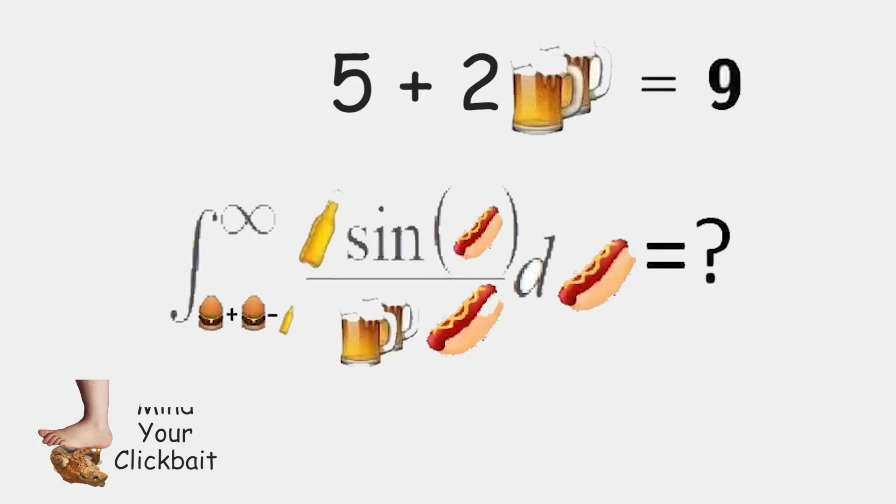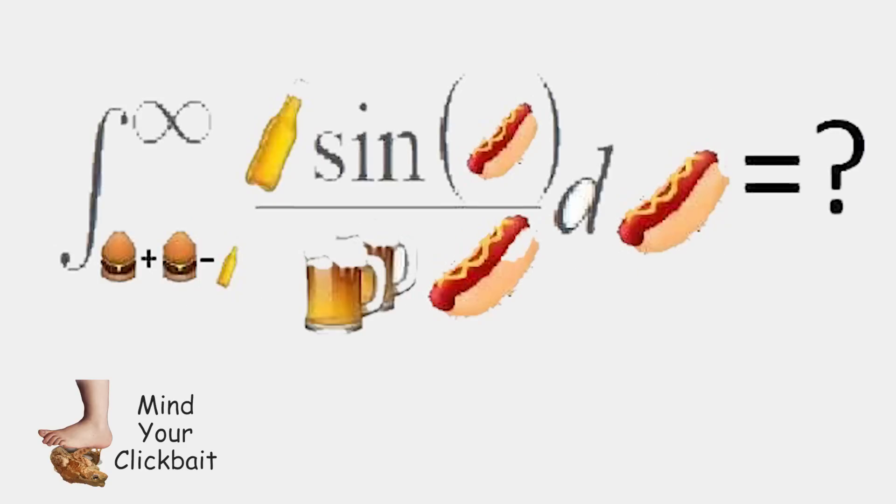That means we can subtract this 5 on both sides to get that 2 times 2 beers are equal to 4. And now we can divide both sides by 2 to get a value for our beer, for 2 beers being equal to 2.